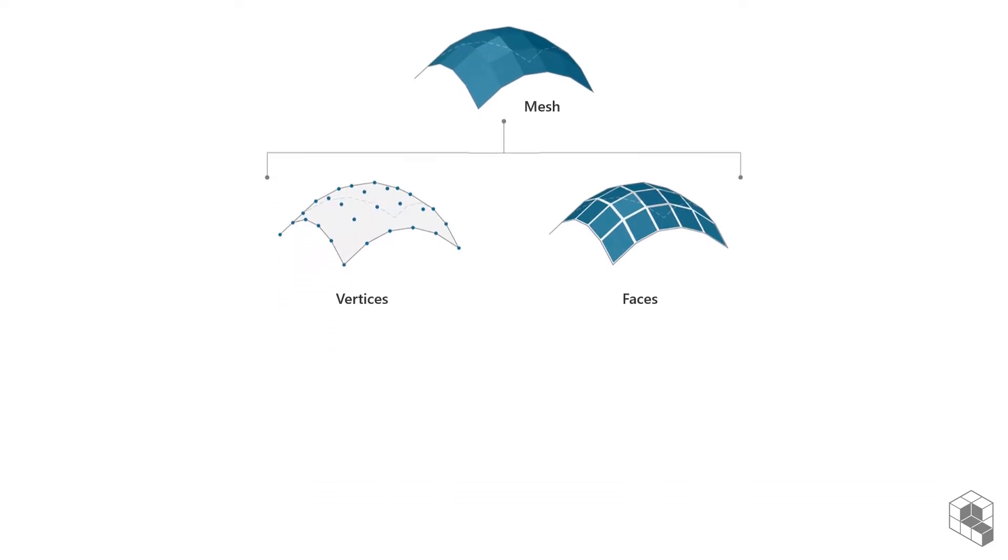Vertices of a mesh is a list of 3D points with an index assigned to each point. For example, the first point in the list has an index 0, and the fourth point has an index 3, and so on.